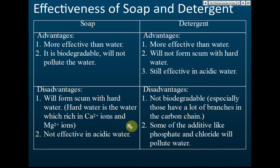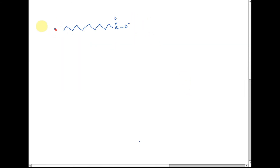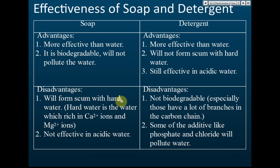Soap is also not effective in acidic water. Acidic water contains a lot of hydrogen ions, and these hydrogen ions will combine with the soap ions to form fatty acid (carboxylic acid) again. This fatty acid molecule no longer has a hydrophilic part — it loses its negative charge — so it can no longer act as a wetting agent or emulsifying agent, and it loses its ability to wash or clean.